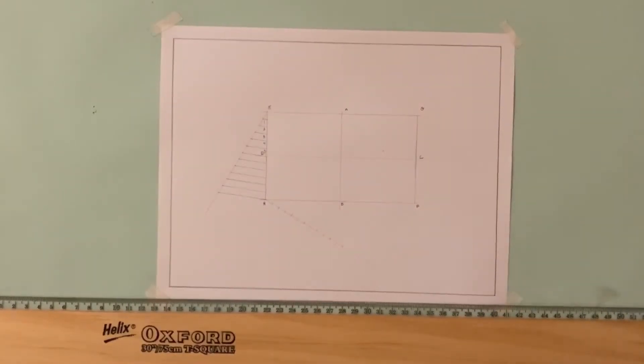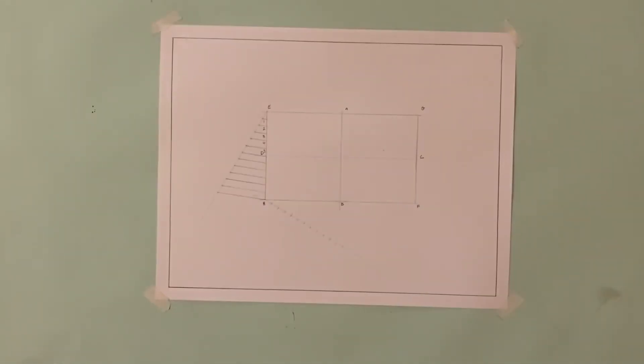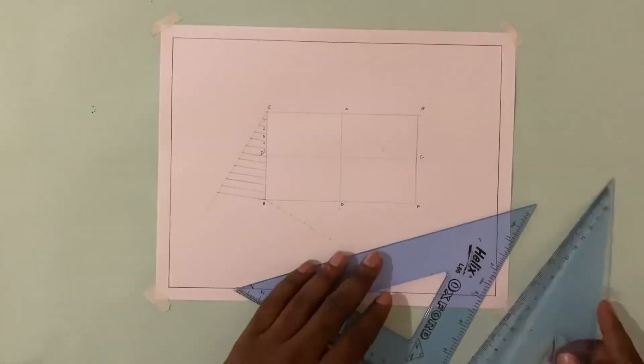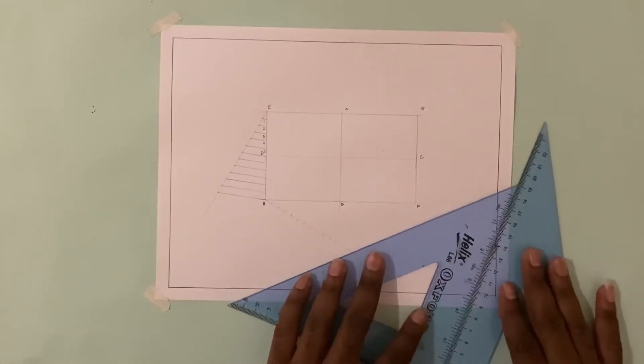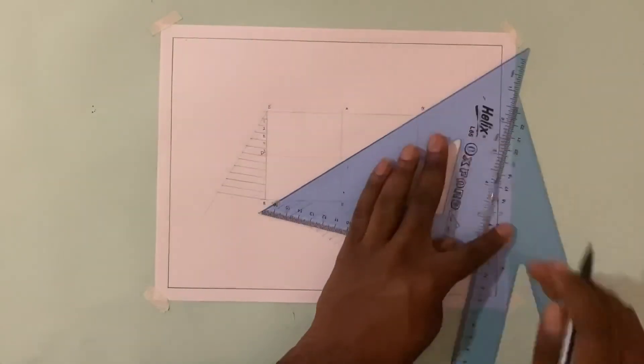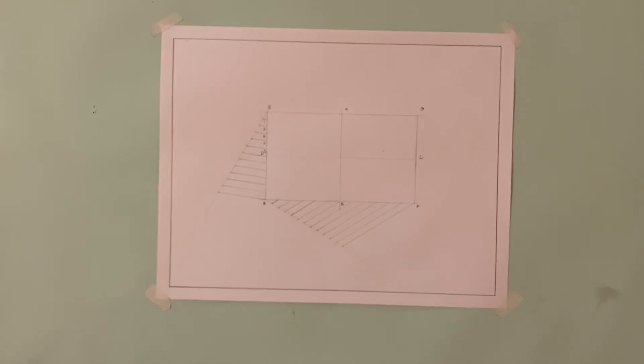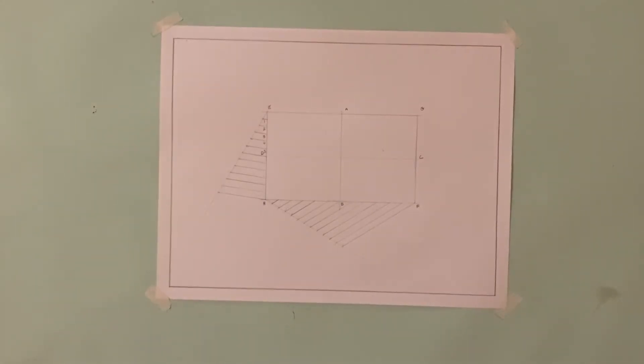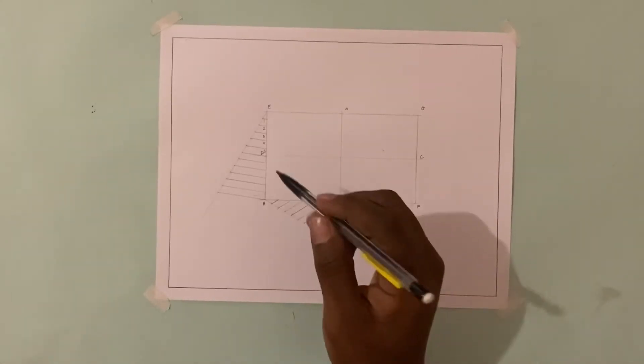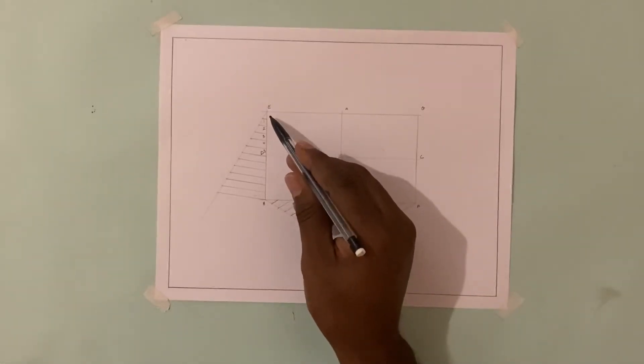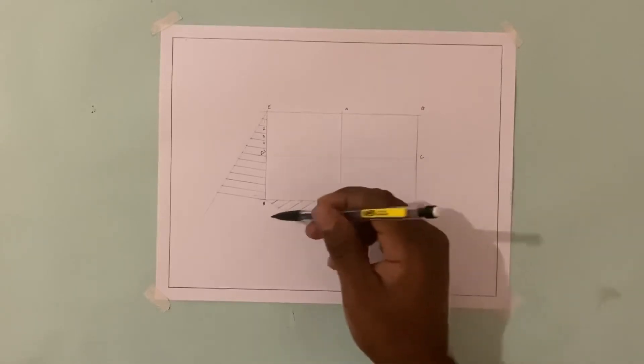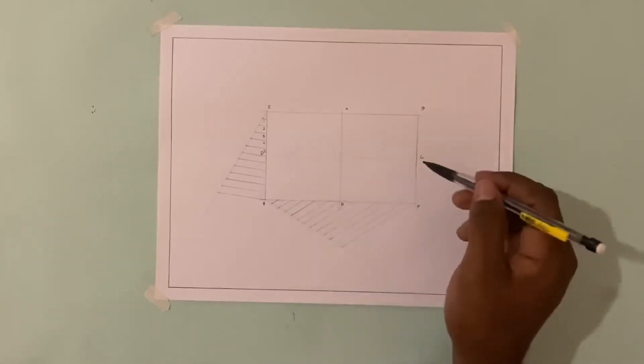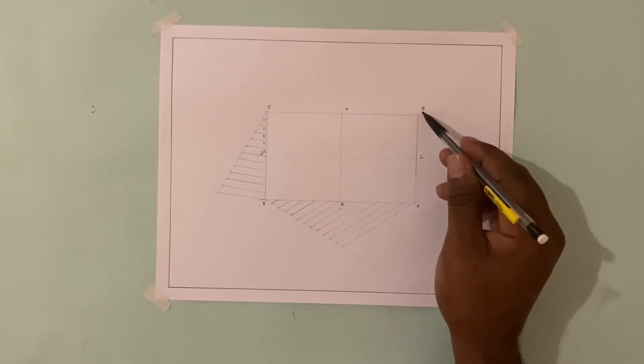Now using both set squares, I'm going to do the same and join point 12 to F. So now we have our line HF divided into 12 equal parts. What we want to do now is mark off our number of points from the line EF and HG onto the line DC and also GF.